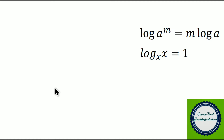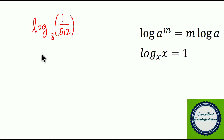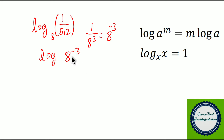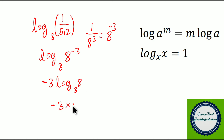Question number 2: log of 1 by 512 to the base 8. Log of 1 by 512 can be written as 1 by 8 cube, and 1 by 8 cube is equivalent to 8 power minus 3. So we write it as log of 8 power minus 3 to the base 8. This is again log A power M format, giving minus 3 into log 8 to the base 8. Since log 8 to the base 8 equals 1, we get minus 3 into 1, so the answer is minus 3.